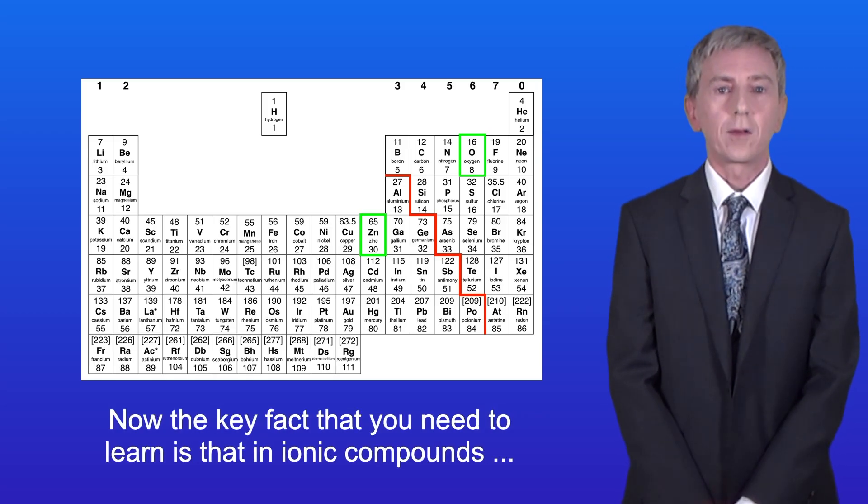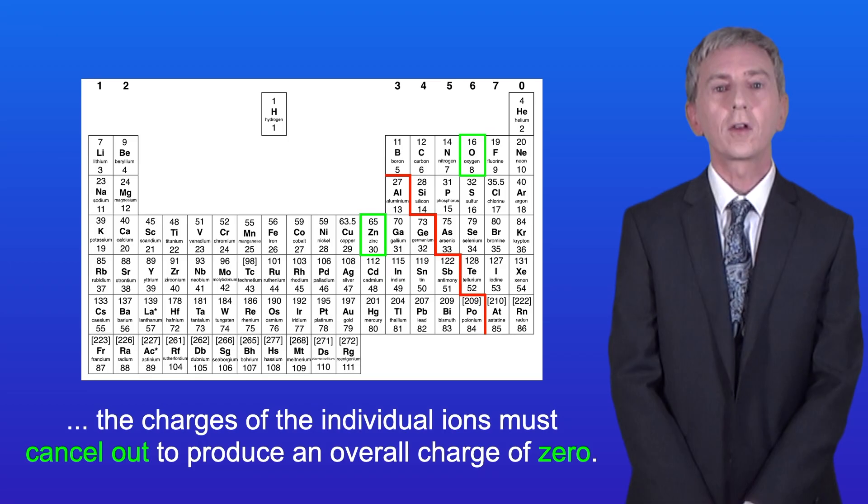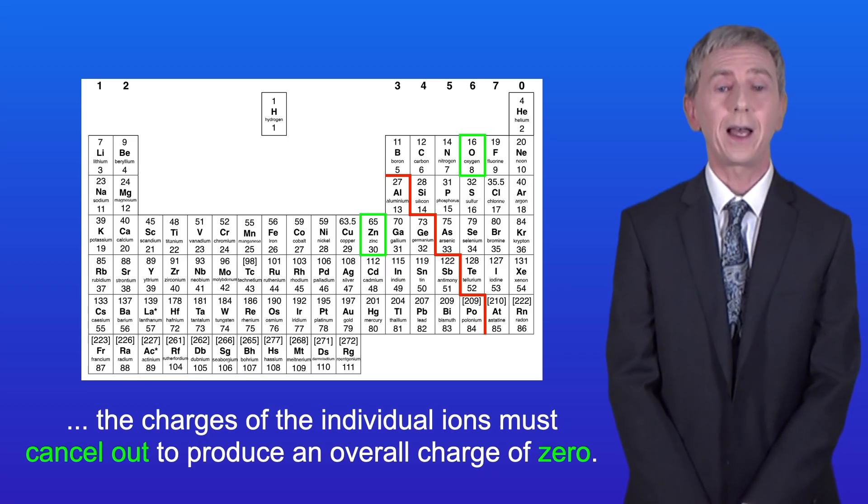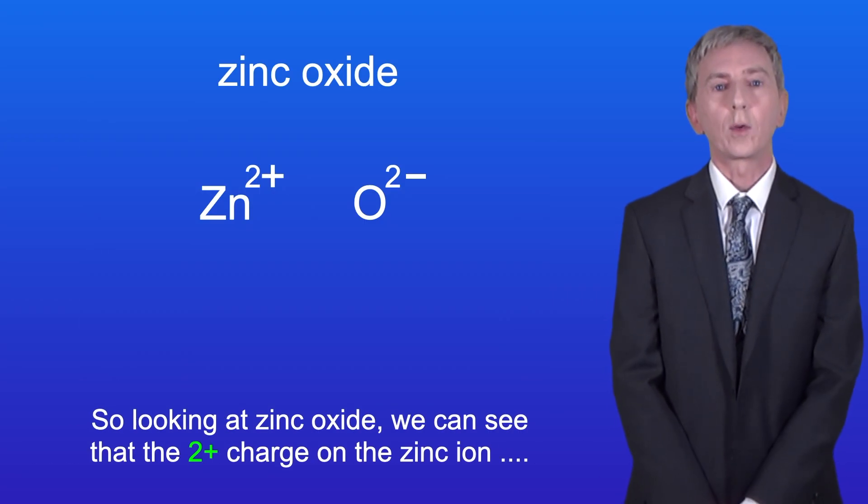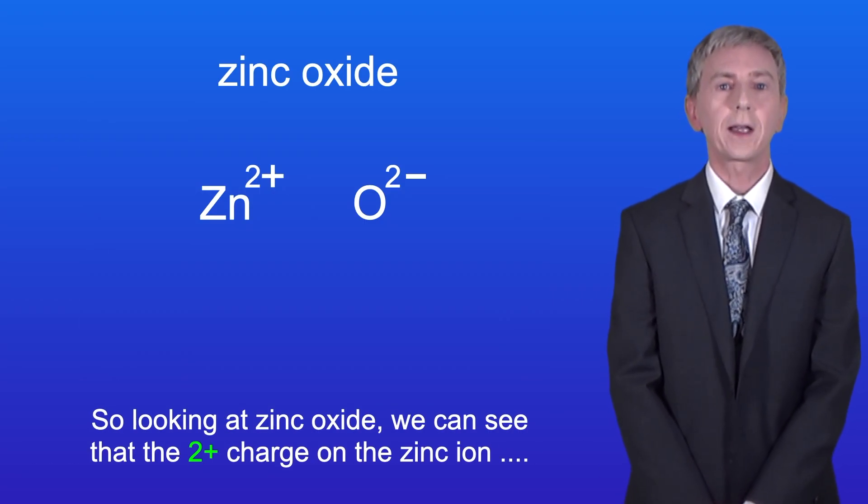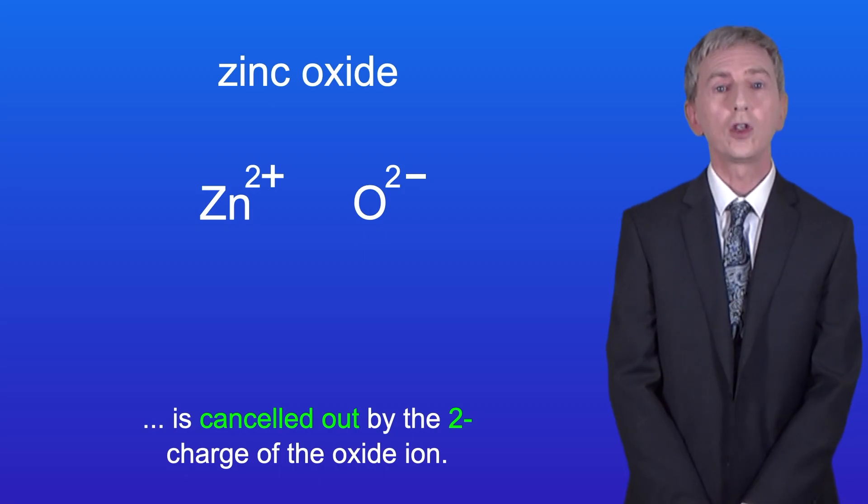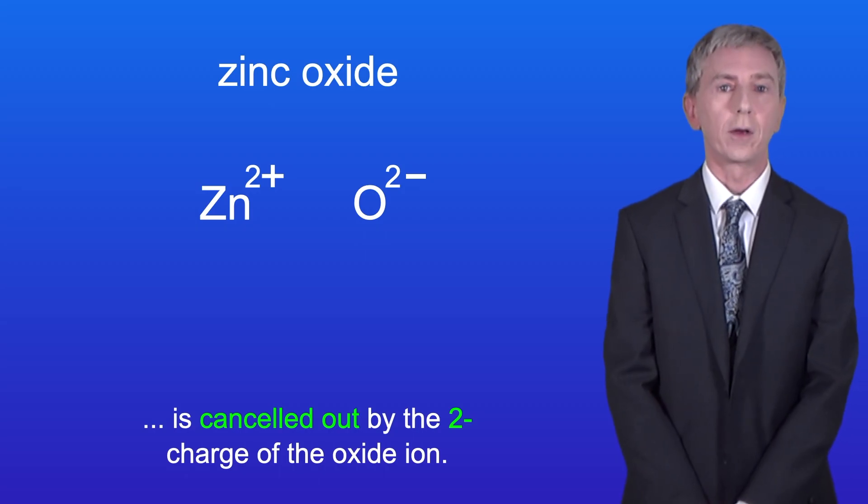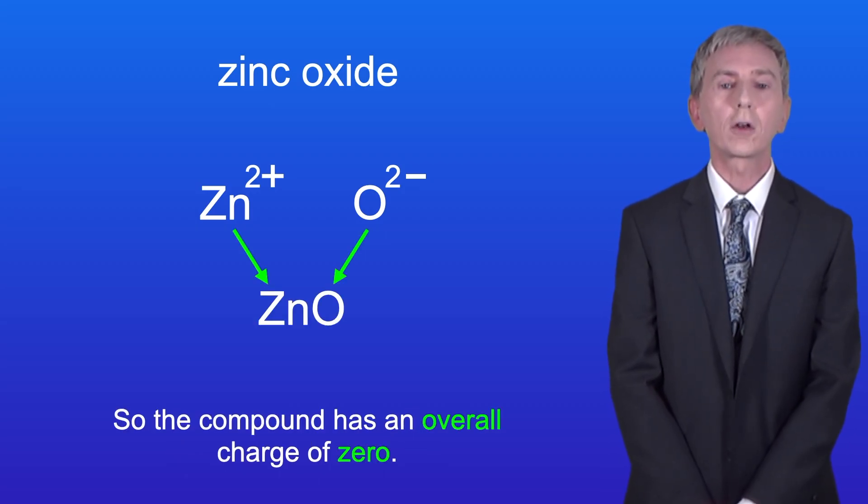Now the key fact that you need to learn is that in ionic compounds the charges of the individual ions must cancel out to produce an overall charge of zero. So looking at zinc oxide we can see that the 2+ charge on the zinc ion is cancelled out by the 2- charge of the oxide ion. So the compound has an overall charge of zero.